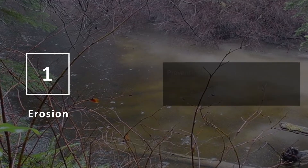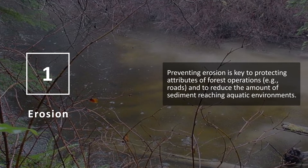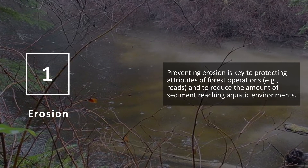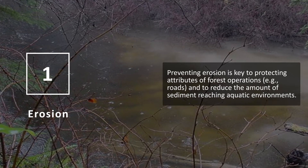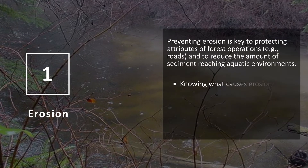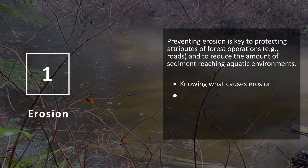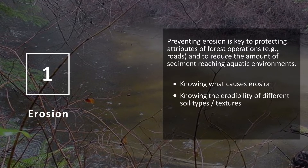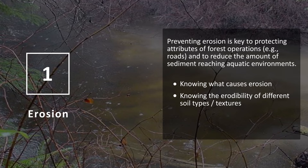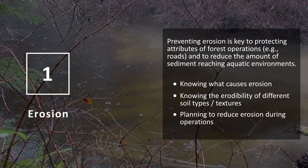Section 1: Erosion. Preventing erosion is key to protecting attributes of forest operations such as roads and to reduce the amount of sediment reaching aquatic environments. It's important to know what causes erosion and the types of erosion, knowing the erodibility of different soil types and textures and planning to reduce erosion during operations.